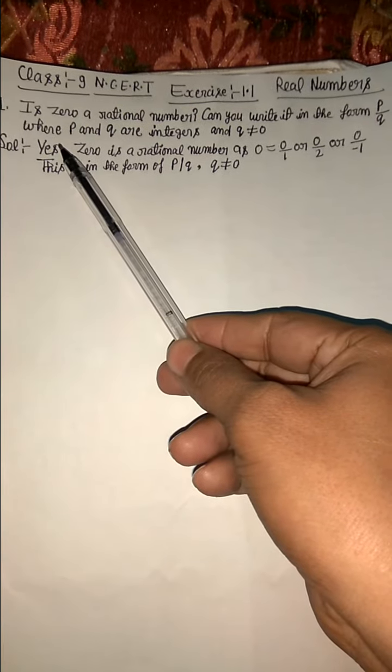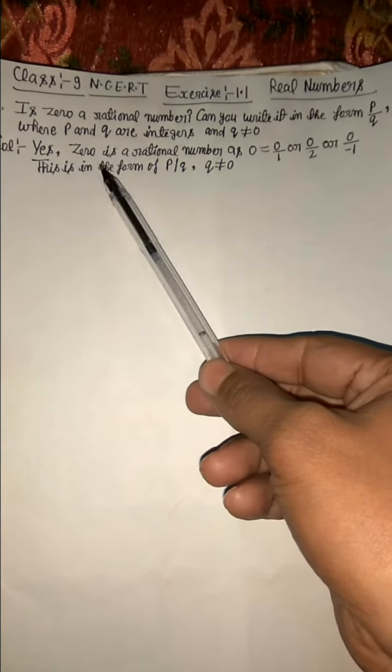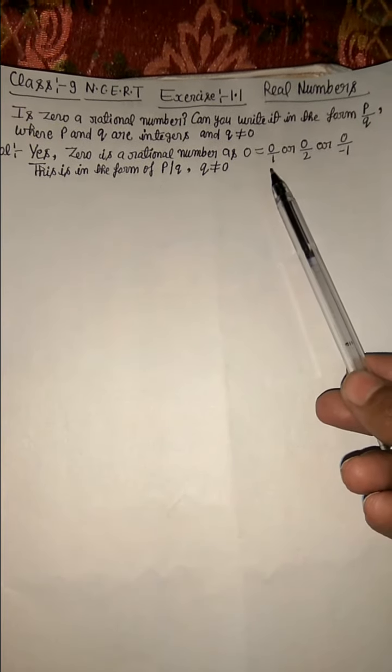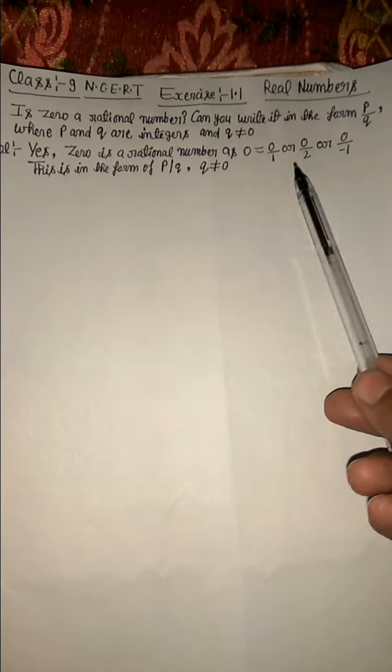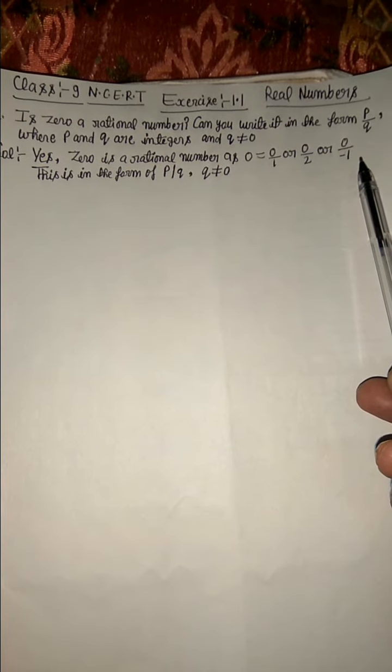Yes. Solution: Yes, 0 is a rational number as 0 is equal to 0 upon 1 or 0 upon 2 or 0 upon minus 1. The number which is in the form of P upon Q is called rational number.